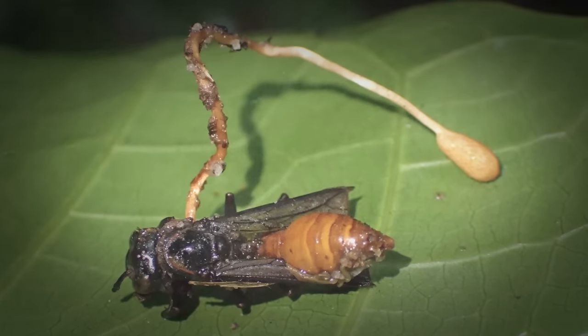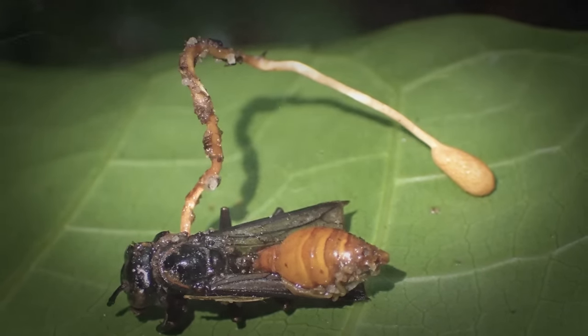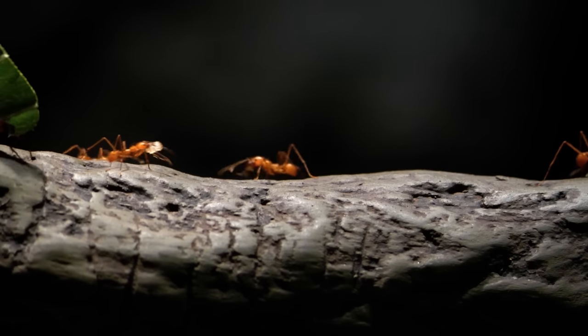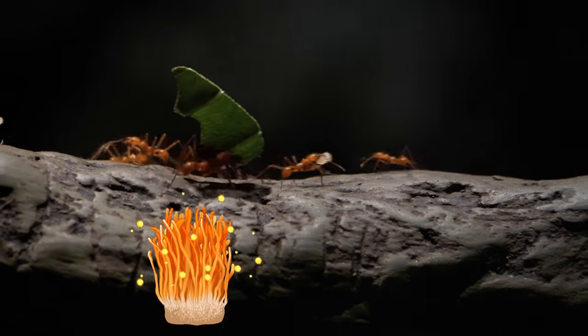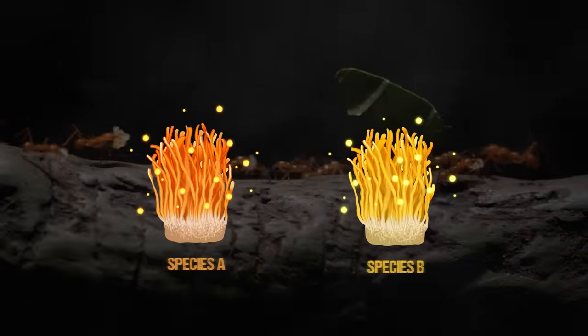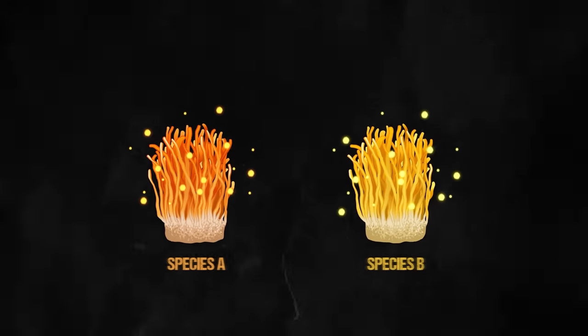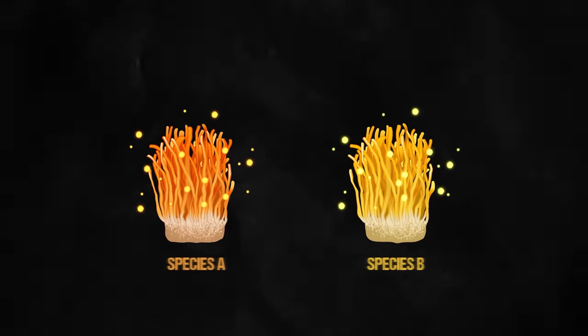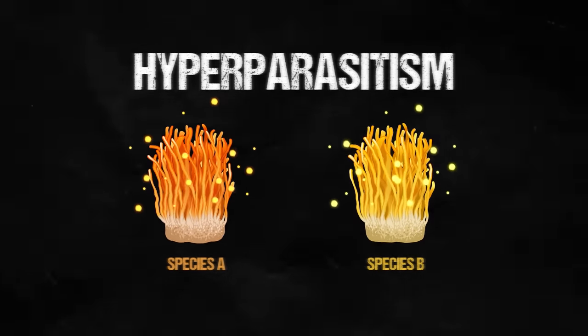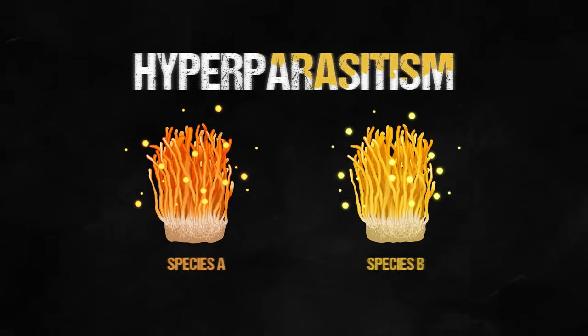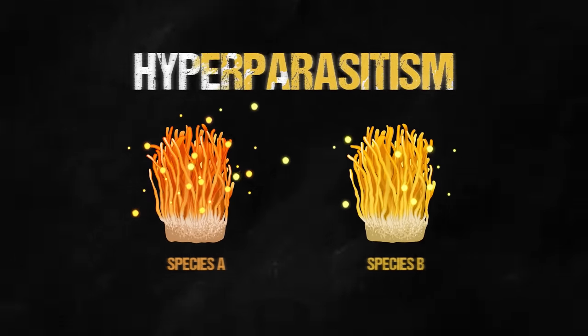Part of the reason for this success is fungi's adaptability. Scientists recently discovered that ants are sometimes colonized by more than one species of cordyceps. Originally, it looked like the two different parasites were living in harmony, but further research suggests that this is probably an example of hyperparasitism, a situation in which one parasite becomes infected by another.